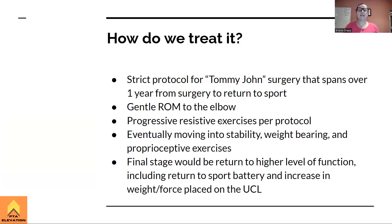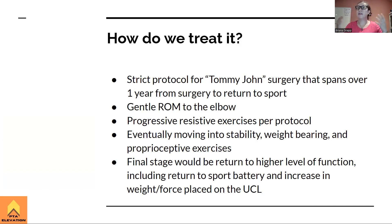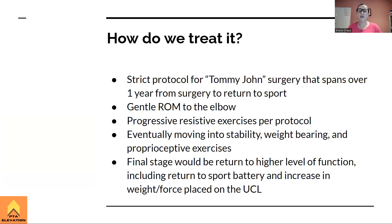For treatment, if it's a grade one sprain, we follow conservative management — rest, avoiding overuse, progressive range of motion, strengthening, and stabilization to return to sport. What the boards will likely ask about is the surgical option: Tommy John surgery, which is the common name for ulnar collateral ligament reconstruction surgery.